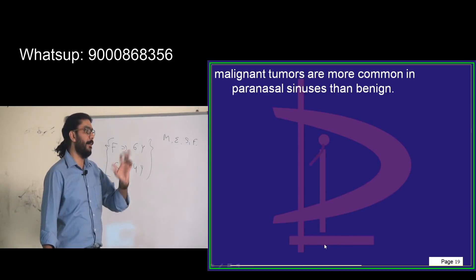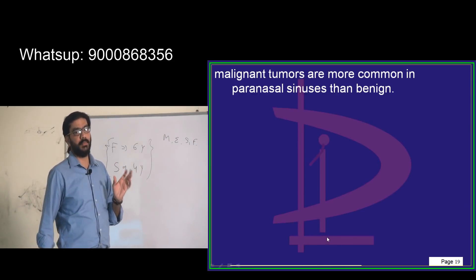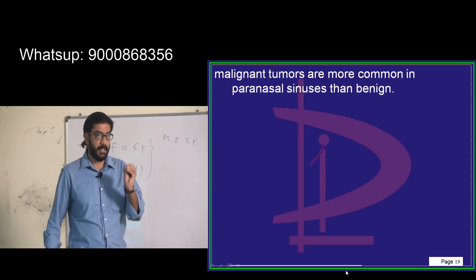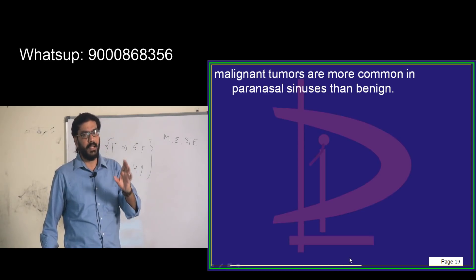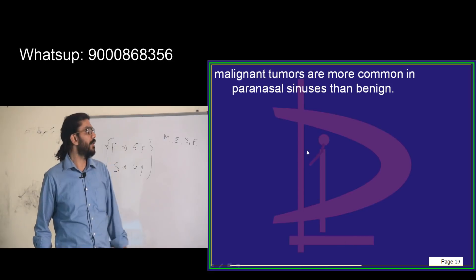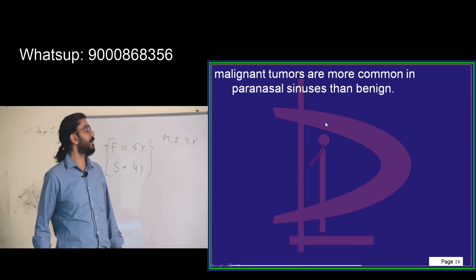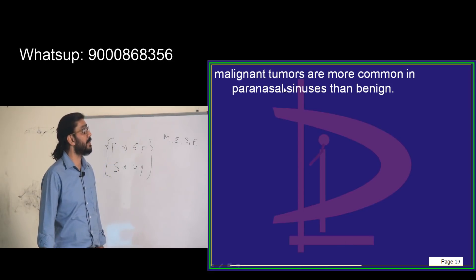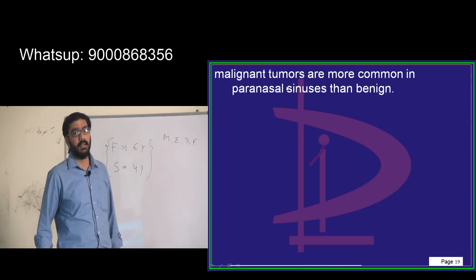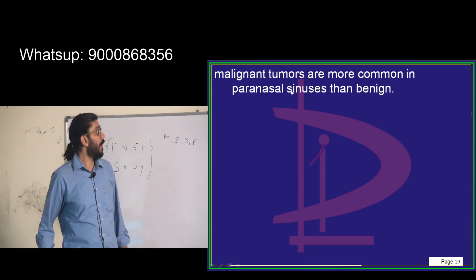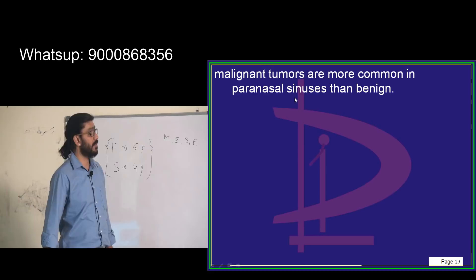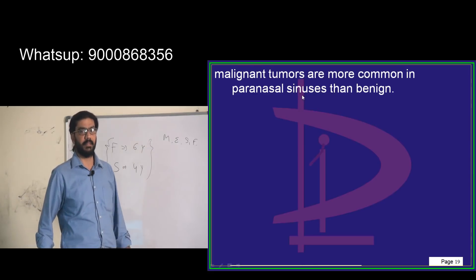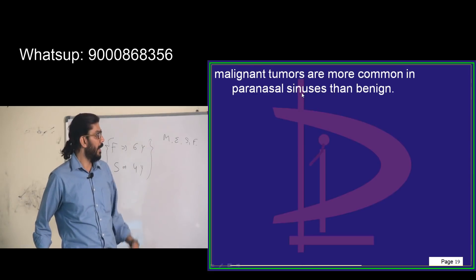Frontal sinus osteoma is the most common benign tumor of the paranasal sinuses. Malignant tumors are more common in paranasal sinuses overall — particularly adenocarcinomas and squamous cell carcinomas. Just remember the key word: frontal sinus osteoma. There are many more points to cover and bits to examine one by one.